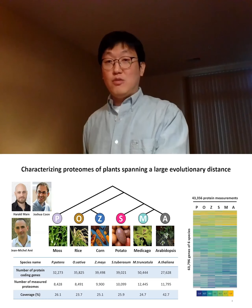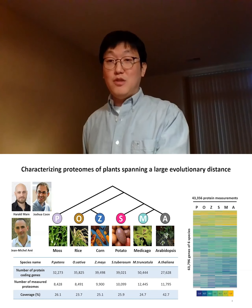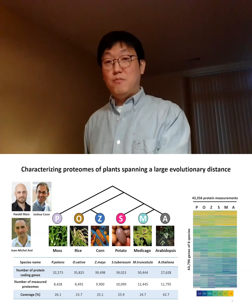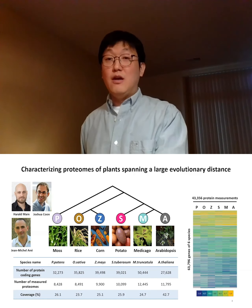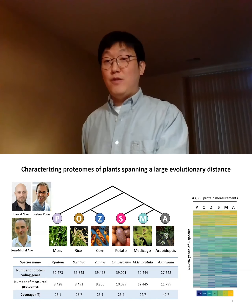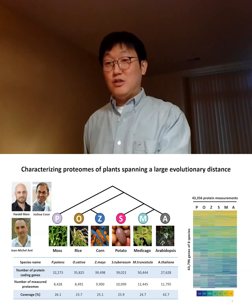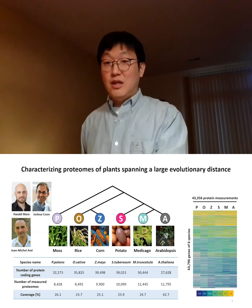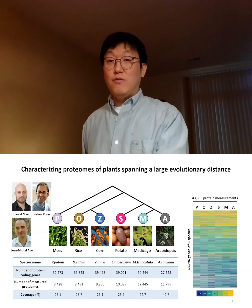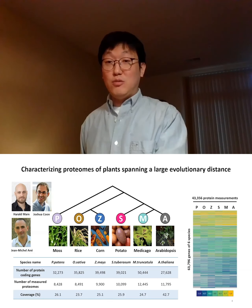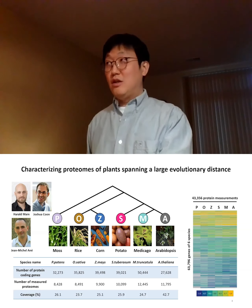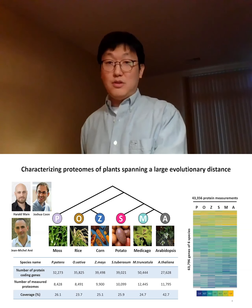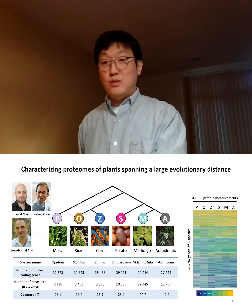Using this approach, together with Professor Zhang Michel's group, we profiled plant species spanning 450 million years of evolution, including moss, rice, corn, potato, medicago, and Arabidopsis, and obtained 43,000 protein values covering more than 25% of all species.